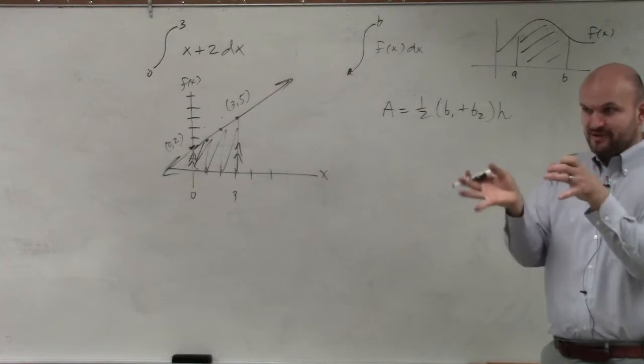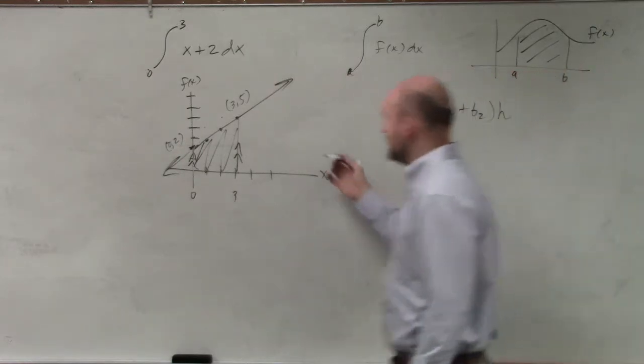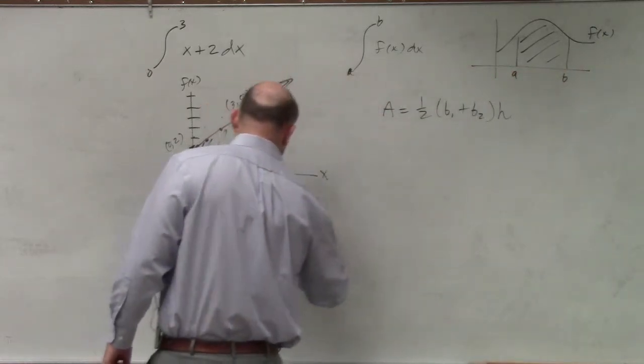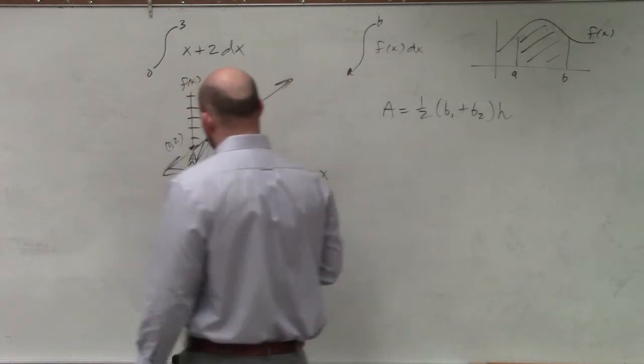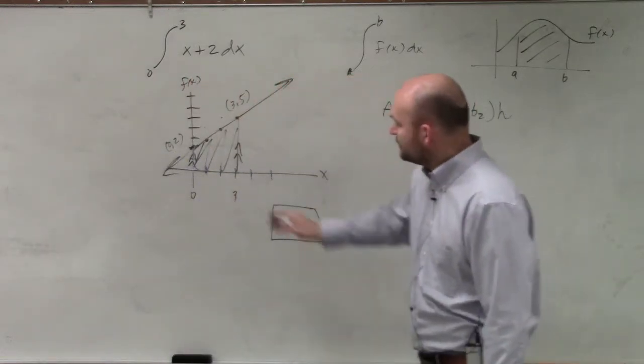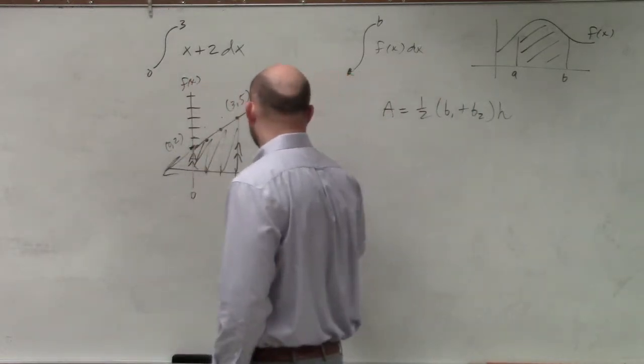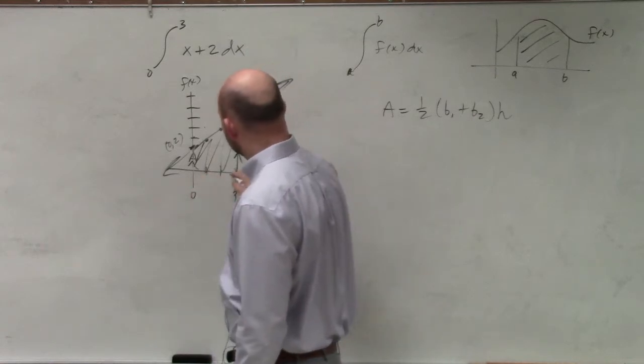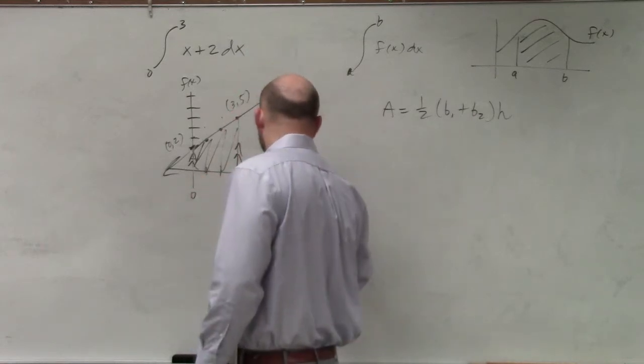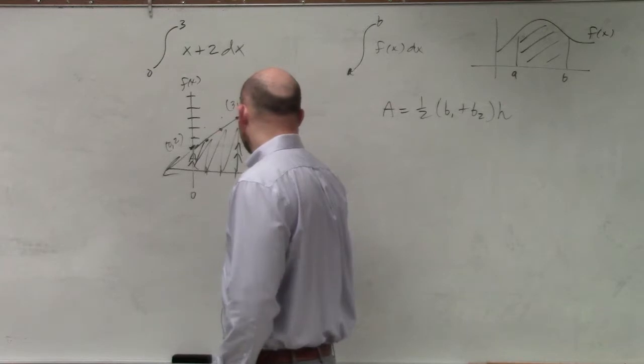So we'd have to rotate the figure actually the other way. So we'd actually want to make sure we wrote it so it looks something like this. So therefore, we could say that this one is 2, over here is going to be 5, and our height is going to be 3.